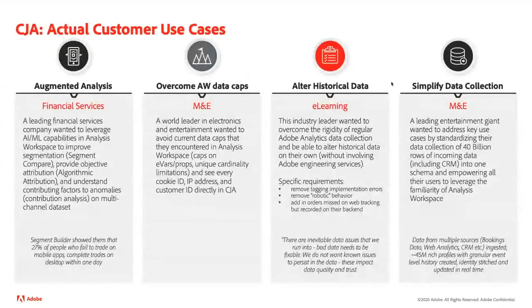Going forward, augmented analysis use cases put machine learning components to work — understanding how segments compare to each other and how different attribution models compare. CJA also overcomes limitations from the past. As you know, Adobe Analytics has a limitation on the number of evars and props you can use. With Customer Journey Analytics those challenges are gone — there's no limitation anymore on the number of variables you can use. The concept of evars and props has changed: it becomes a configurable thing in the data view configuration, providing much more flexibility.